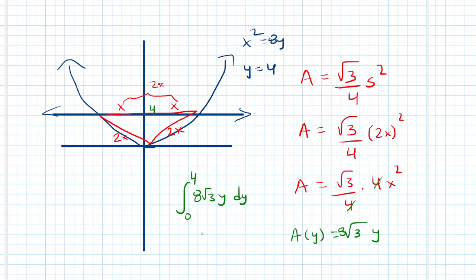So integrating this, we get 4√3y² going from 0 to 4. Plugging in y = 4, we have 4² is 16, times 4 is 64, and that's going to be 64√3. If I plug in 0, I get 0, and so this is going to be my volume.